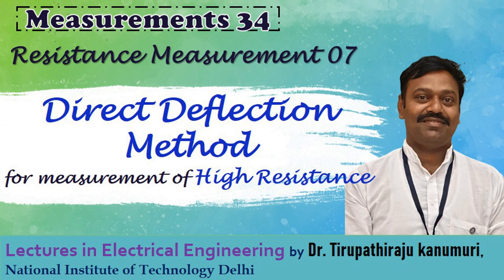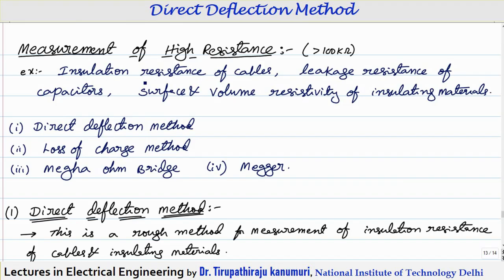Hi all, today we are going to discuss about measurement of high resistance. It is called a high resistance if the value is greater than 100 kilo ohm. Examples of high resistances are insulation resistance of cables, leakage resistances of capacitors, and surface and volume resistivity of insulating materials.